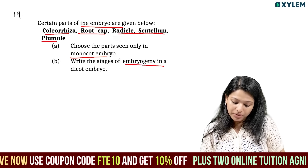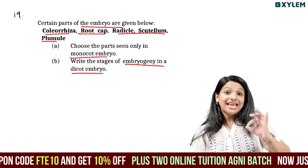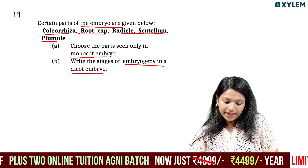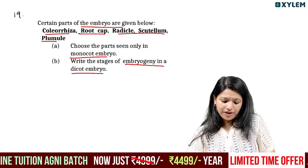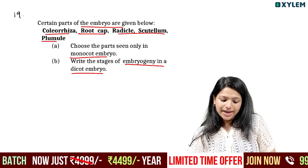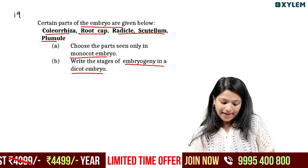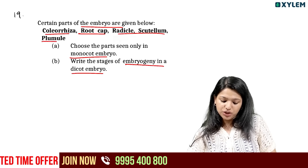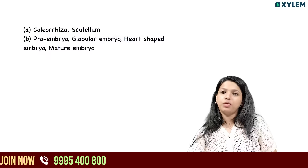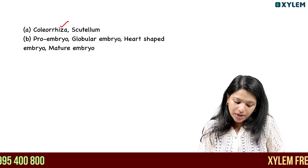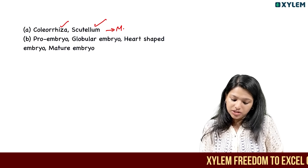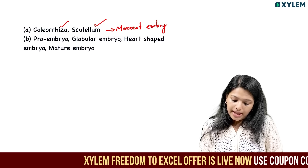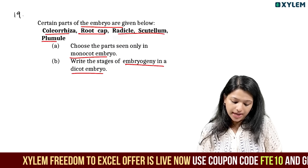Write the stages of embryogeny in the dicot embryo. Among the given parts — coleorhiza, root cap, radicle, scutellum, and coleoptile — the monocot embryo contains the coleorhiza and scutellum. Scutellum is not present in dicot; coleorhiza is specific to monocot embryos.